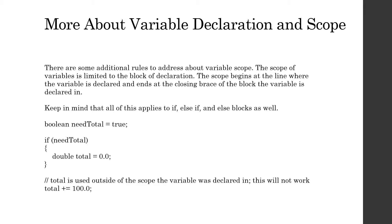Back in chapter two, we saw a little bit about variable scope. We need to keep in mind that you need to declare a variable before you can start using it. Otherwise, your program doesn't recognize what that variable is, because of the top-down approach with code execution. In addition to that, there are a few other rules to address about variable scope. Another rule to keep in mind is that the scope of variables is limited to the block of declaration.